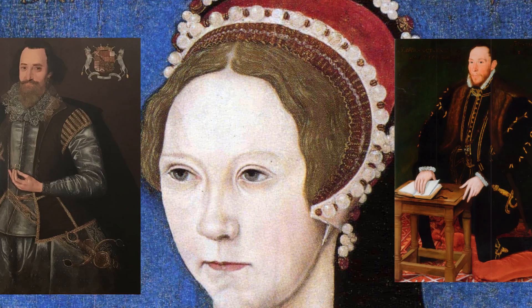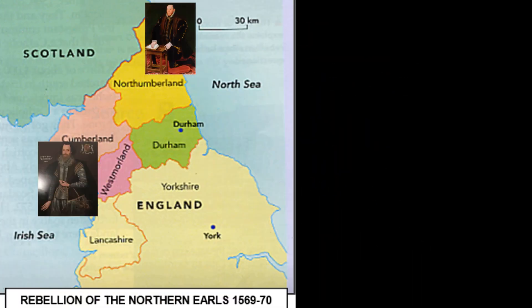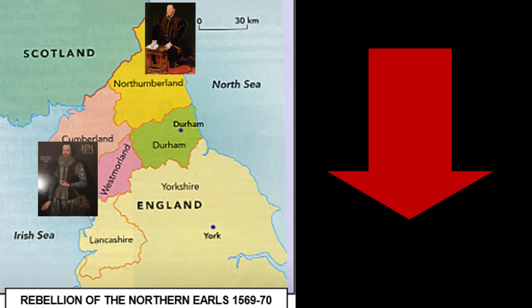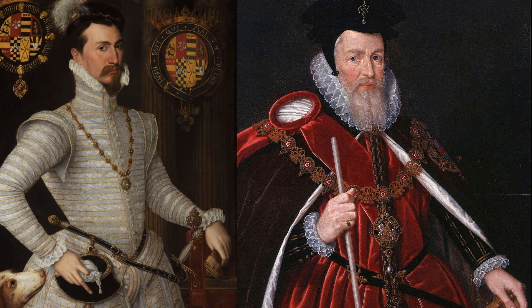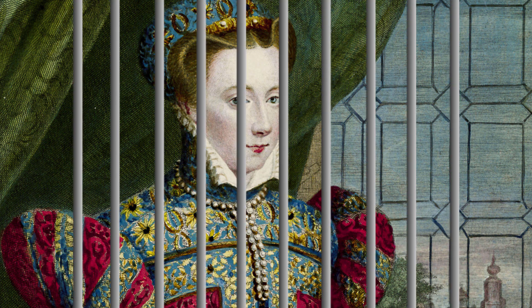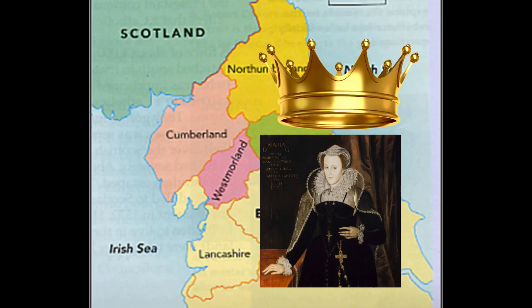Another reason is that the Earls had held greater influence under Mary's rule as Catholics, and since Elizabeth had taken the throne their influence in court had lessened as she took on new advisors such as William Cecil and Robert Dudley. Finally, Mary Queen of Scots was now being imprisoned by Elizabeth, and as her cousin and a devout Catholic she could be used as a figurehead for Catholics in England, and the Earls planned to place her on the throne.